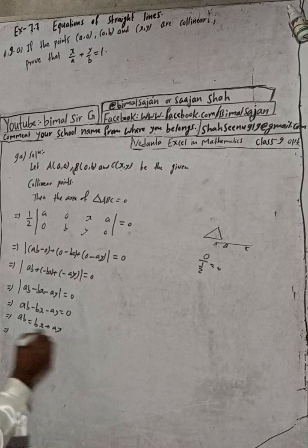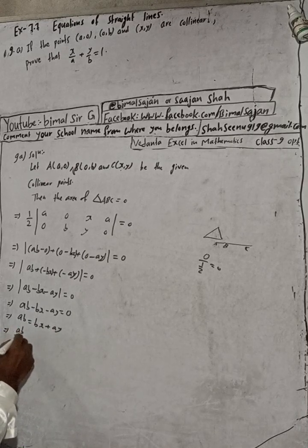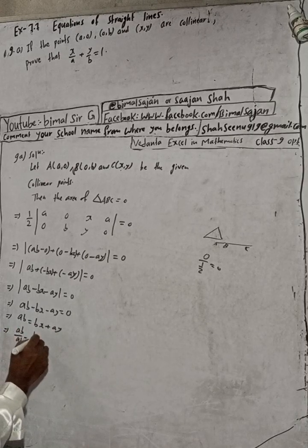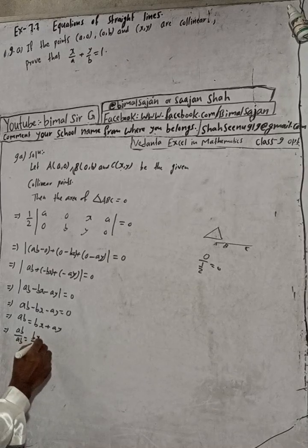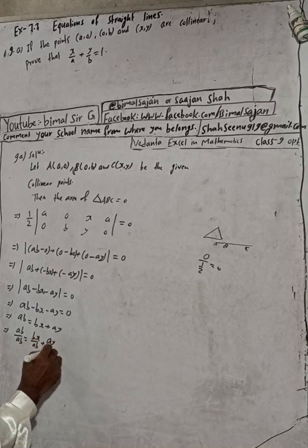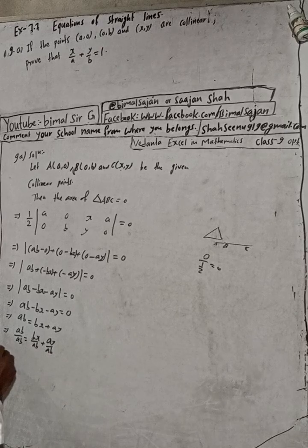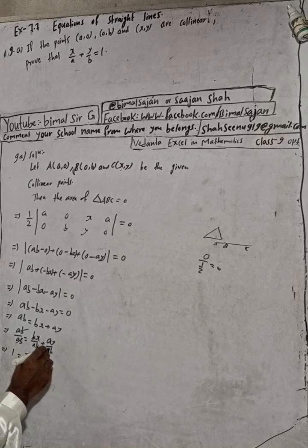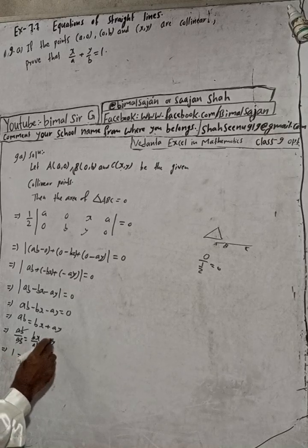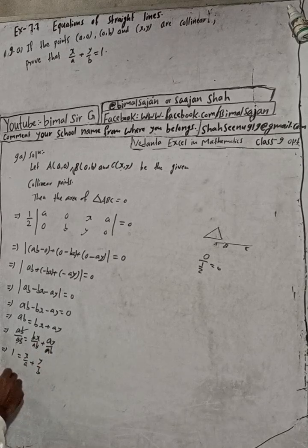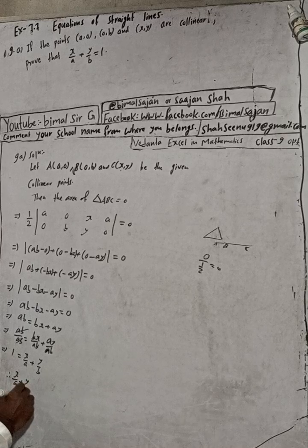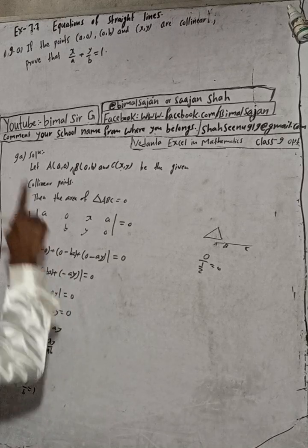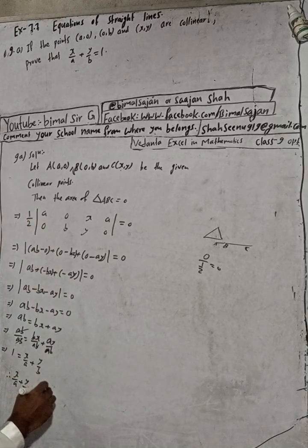Now divide both sides by ab: ab/ab equals bx/ab plus ay/ab. This gives 1 equals x/a plus y/b. Therefore x/a + y/b = 1. Proved.